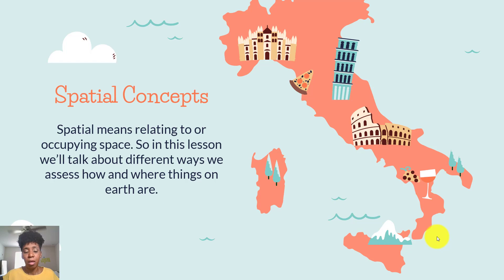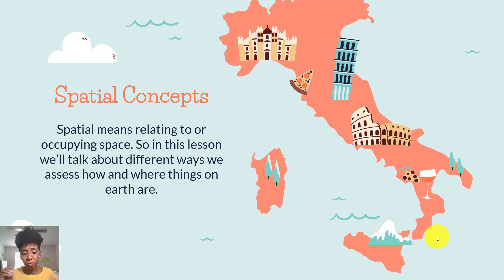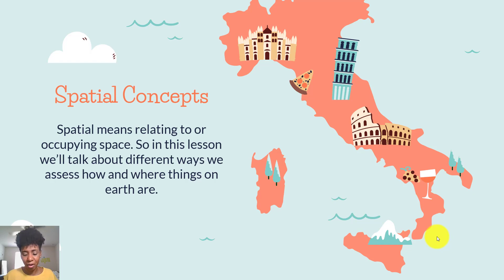So spatial concepts — spatial in this case means relating to or occupying space. In this particular lesson, we're going to talk about different ways to assess why things are on the earth the way they are, how they got there, and where they're actually at. We look at where they're at, how they got there, and then ask: why is it there in the first place? That's spatial concepts — using those concepts to understand and assess the why of where, why things are the way they are on the planet.